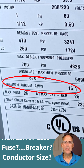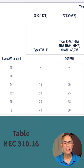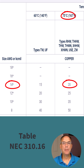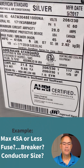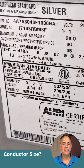The tag tells us the minimum circuit ampacity is 15.1 amps. If we go over to Table 310.16 and look at a number 14 conductor, a number 14 is able to carry 20 amps, so number 14 would be acceptable for that installation for our minimum circuit ampacity.